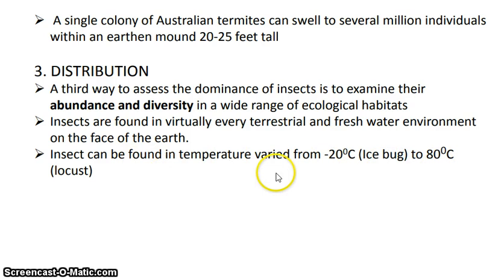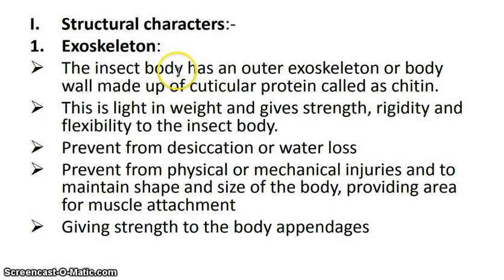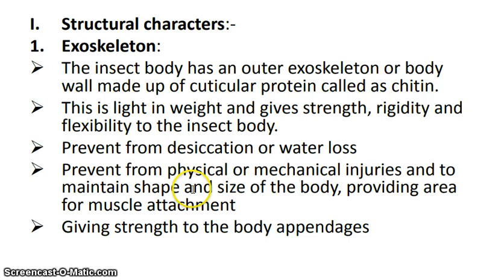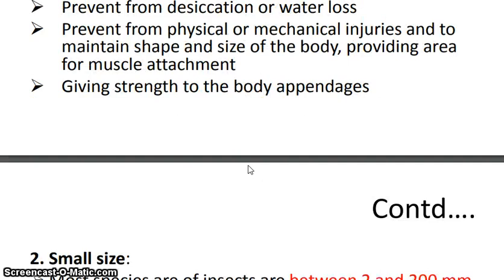Insects have an exoskeleton — a supporting structure present outside the body — made up of a specialized protein known as chitin. Chitin is a very hard and tough protein which provides rigidity and support to the insect body. It is light in weight, gives strength, rigidity, and flexibility, and is impermeable to water, preventing water loss even in harsh desert environments. Chitin also protects against physical or mechanical injuries and provides area for muscle attachment.